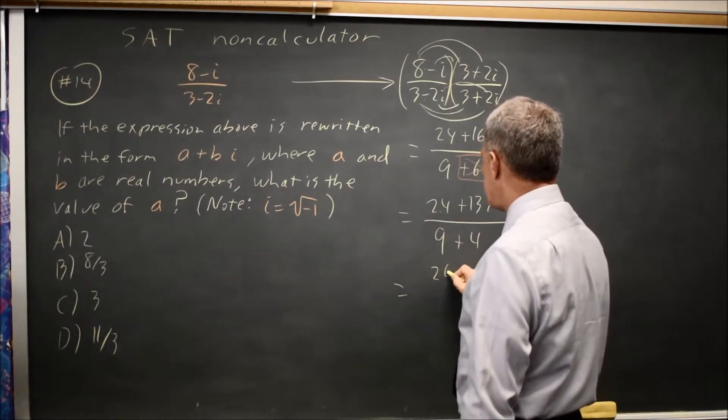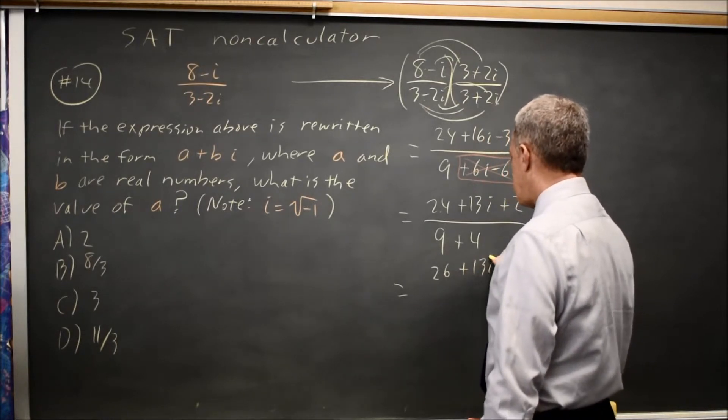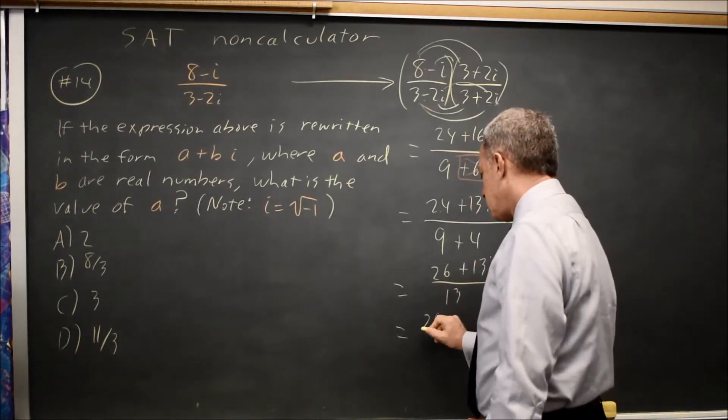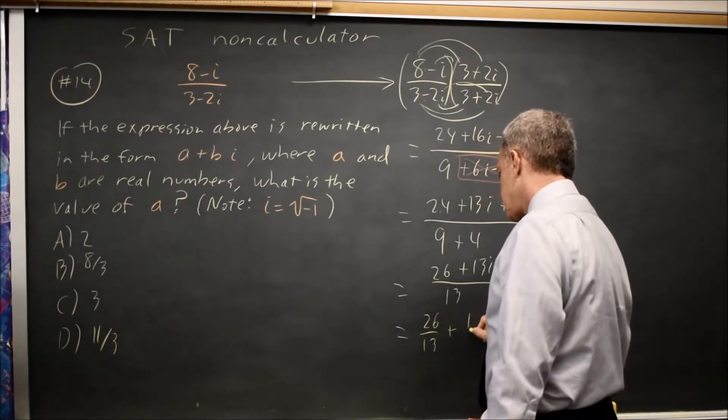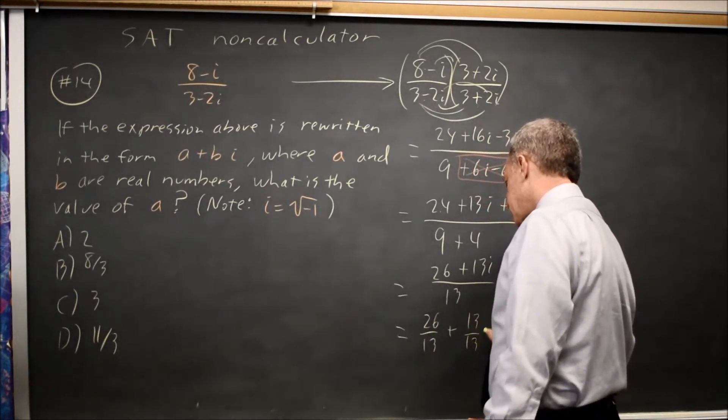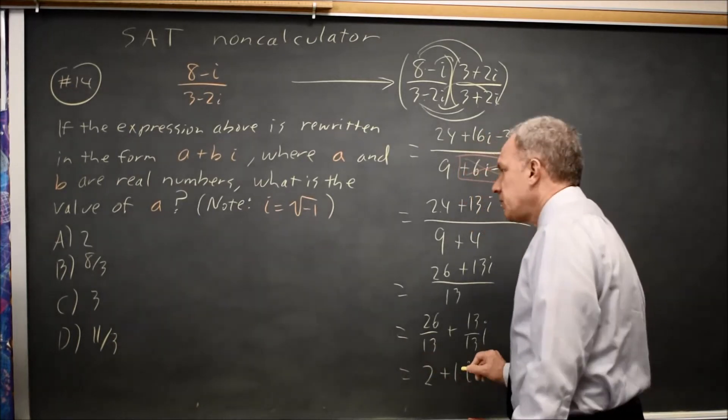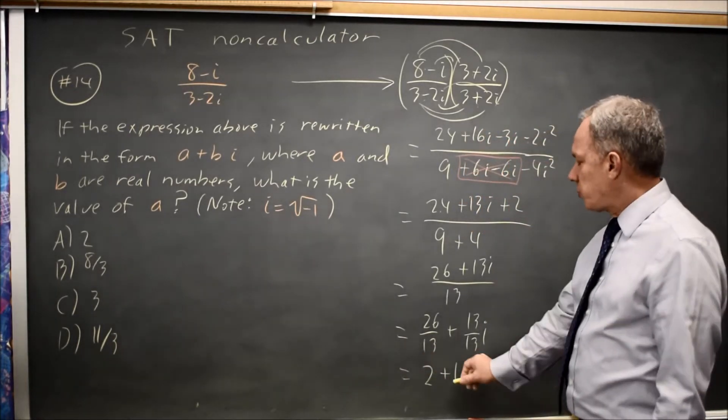24 plus 2 is 26 plus 13i over 13. That's 26 over 13 plus 13 over 13 times i, which is 2 plus 1i in the form a plus bi.